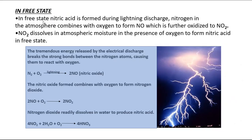In free state, nitric acid is formed during lightning discharge — that is, nitrogen in the atmosphere combines with oxygen to form nitric oxide, which is further oxidized to nitrogen dioxide. This nitrogen dioxide dissolves in atmospheric moisture in the presence of oxygen to form nitric acid in free state. The tremendous energy released by the electrical discharge breaks the strong triple bond between the nitrogen atoms.